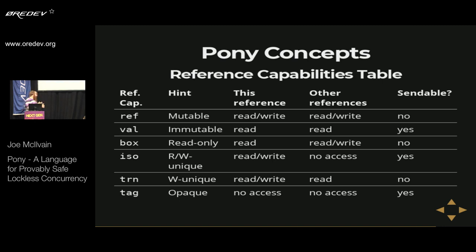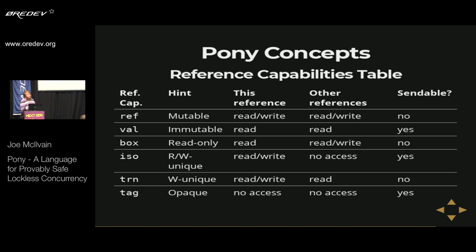ISO can actually be downgraded to any other capability, because when you give up your access to it as part of the downgrade process, nobody anywhere has any access to it, so it can become anything. Trn is similar to an isolated reference, but it is only write-unique instead of read-write unique — other object references can exist, but none of them can write to the object. It's not sendable because it's still mutable and cannot be shared. But you can consume it to send it: by consuming your one reference, you can decay the trn to a val and make it immutable, since you were the only one who could write to it. That's why it's called trn — it's short for transitional.